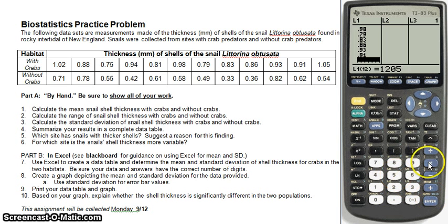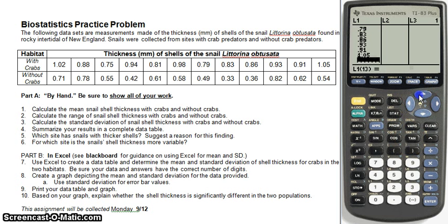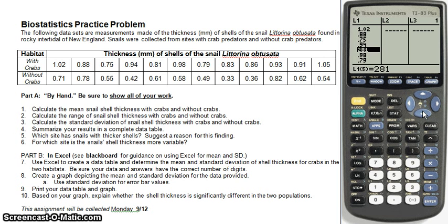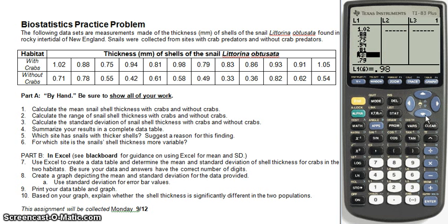Now let's double-check this list, because it's very easy to make mistakes and I already spot one, so let's go to the top. 1.02 is correct, should have 0.88, 0.75, 0.94 — and then it should be 0.81. So I made a mistake; I'm going to type in 0.81 over top of that, and when I hit Enter it replaces that point. So: 0.81, 0.98, 0.79, 0.83, 0.86, 0.93, 0.91, and 1.05.